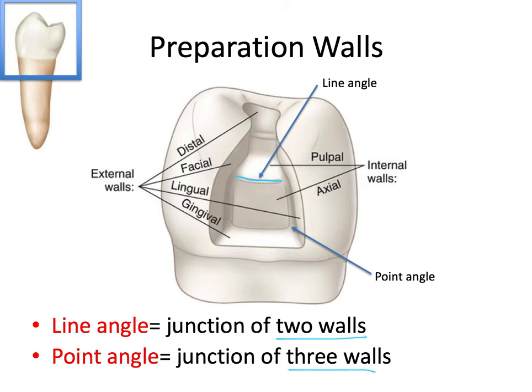If we have a junction of three walls coming together, that point where three walls join is called a point angle. The naming depends on which walls are intersecting: the line angle formed by the axial wall and the pulpal floor is called the axio-pulpal line angle. The corner where three walls meet — for example axial, lingual, and gingival — is called the axio-linguo-gingival point angle. You just combine all the involved walls.